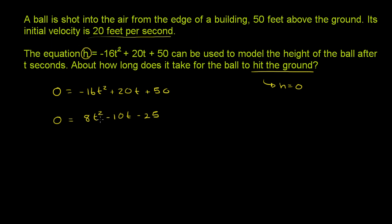50 divided by negative 2 is minus 25. And so we have 8t squared minus 10t minus 25 is equal to 0. And now we solve. We could complete the square here, or we can just apply the quadratic formula, which is derived from completing the square.